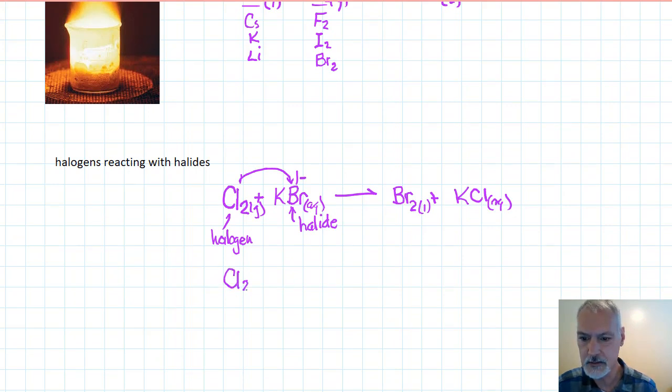Suppose I had taken chlorine gas. Instead of potassium bromide, I'd use potassium fluoride instead. Here I have again a halogen. Here I have again a halide. In this case, there's no reaction. They don't switch partners.